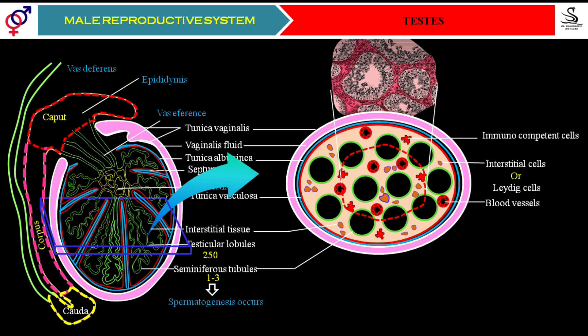Inside the seminiferous tubules you can also observe a number of other cells. In the next class, we will magnify one of the seminiferous tubules and understand it in detail. I hope this video has been useful for all of you. Please make notes, understand all the things, and remember all the points. We have discussed the interstitial tissue and the specialized Leydig cells — their role will be explained in the next videos.